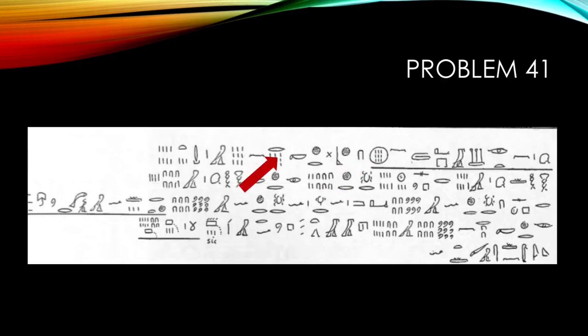Take away 1 ninth of 9. And that means 1. The remainder is 8. Multiply 8 times 8. It makes 64.